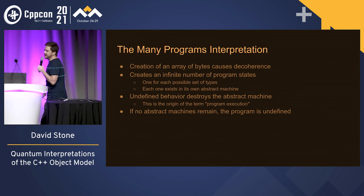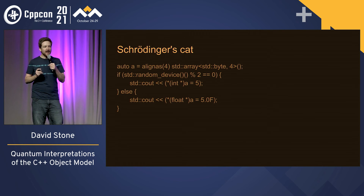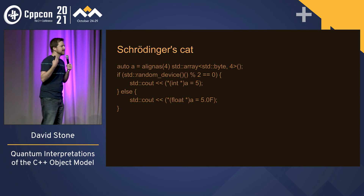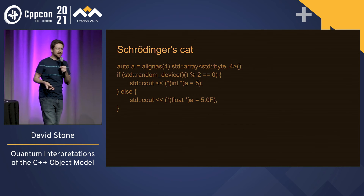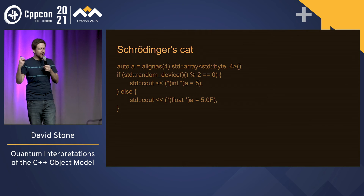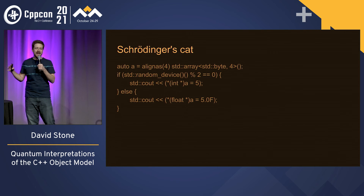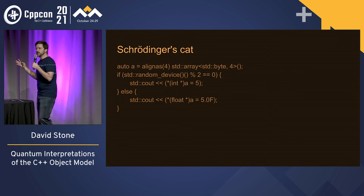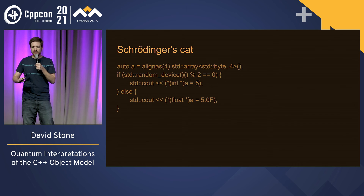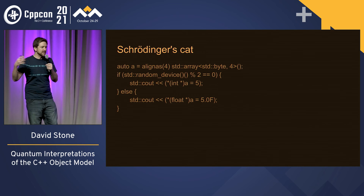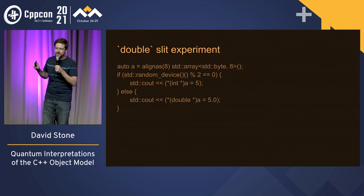If no abstract machines remain, the behavior of your program is undefined. Now, I'd like to show you Schrödinger's cat — named for the Unix utility cat that outputs a value. You don't know what value it's going to output, because that depends on the type. Here, we create an array of bytes and get a random number that cannot be predicted — true hardware randomness. Then we either cast that to a pointer to int and assign to it, or cast it to a pointer to float and assign through it. Both interpretations say that this is well-defined code. Under the Copenhagen interpretation, the array of bytes has some sort of unknown state, and you can expand it a little bit — you can have the double-slit experiment just by changing the types a little bit.